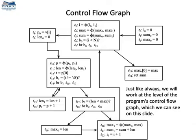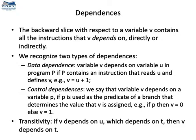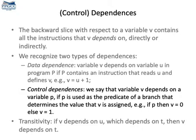Here's the CFG of that program. Notice that we will be working in SSA form, so every variable in our program will have a single definition site. To compute a program slice, we compute backward dependencies. There exist two types of dependencies. First, we have data dependencies: a variable v depends on a variable u if the program contains an instruction that reads u to define v. Then we have control dependencies: a variable v depends on another variable p if p is used in a conditional test — a predicate — whose branch determines if v will be assigned or not.